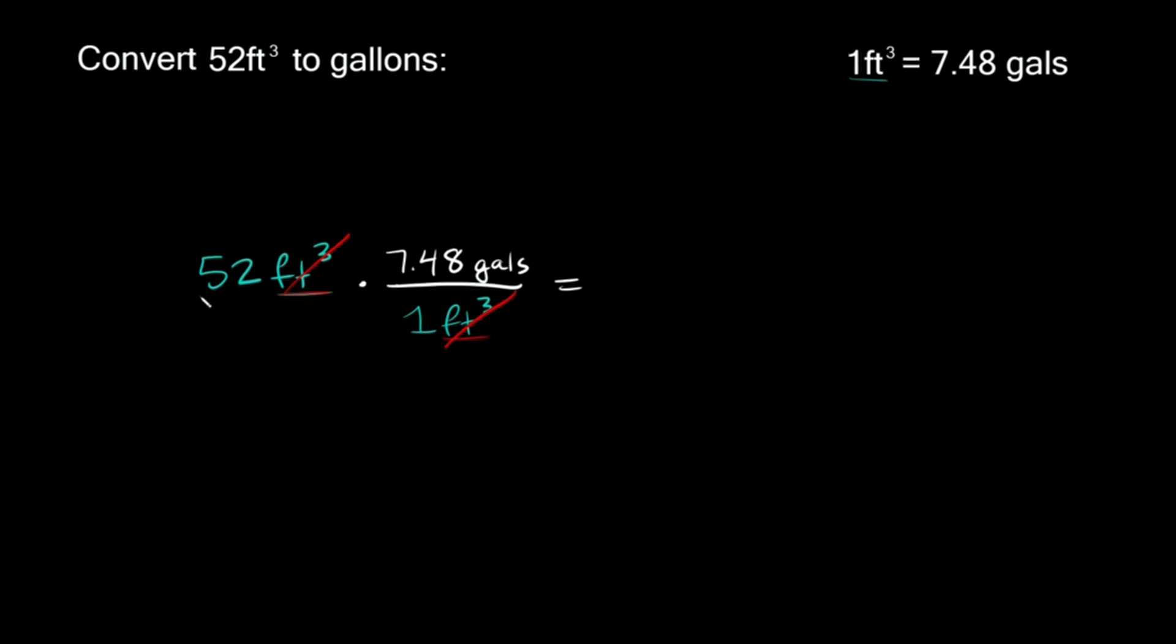So then the last thing we have to do here is just multiply everything together. So multiply everything on top together and whatever is on the bottom. So on top we have 52 times 7.48 gallons. And then on bottom we just have a one, so we're going to divide by one. So then this is equal to, well 52 times 7.48 that's equal to approximately 388.96 and then this divided by one it's still just itself.